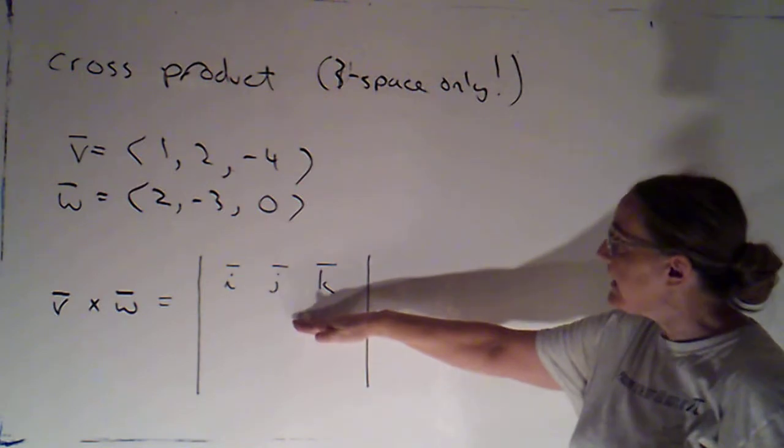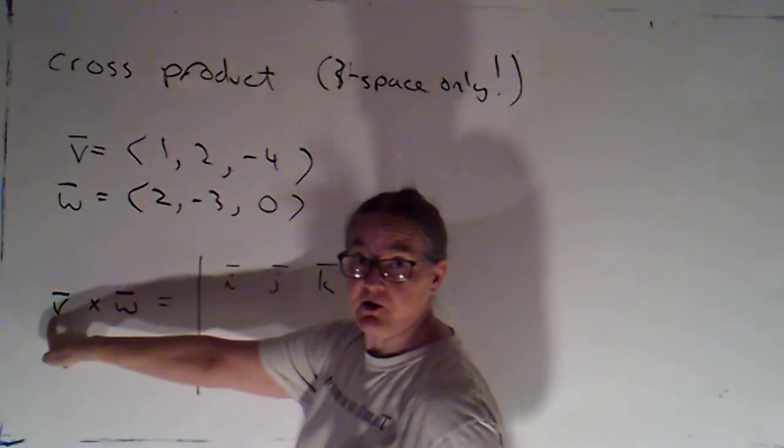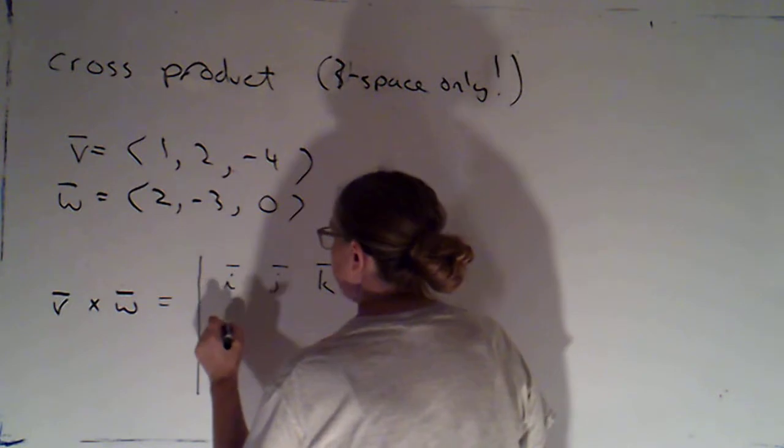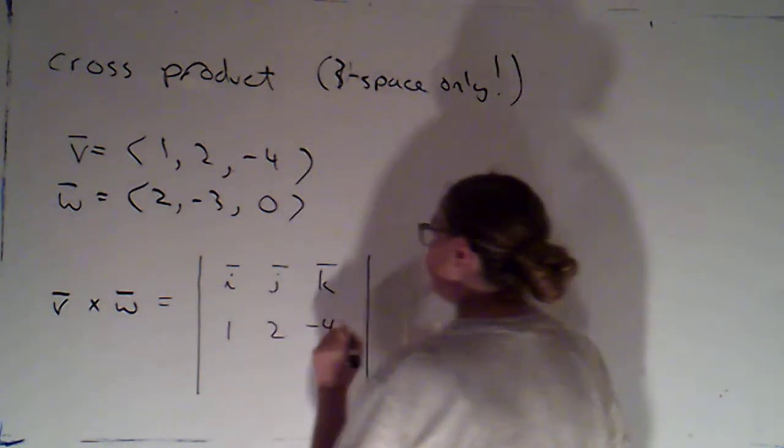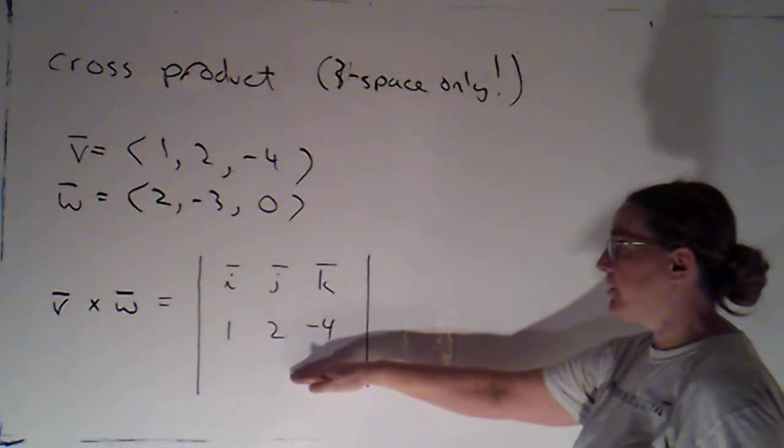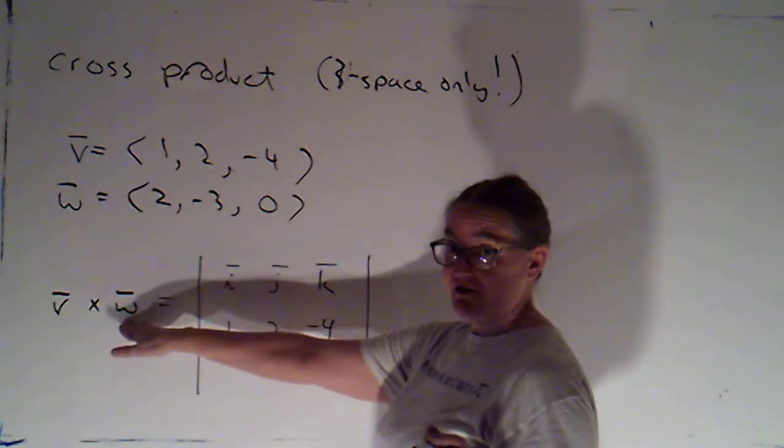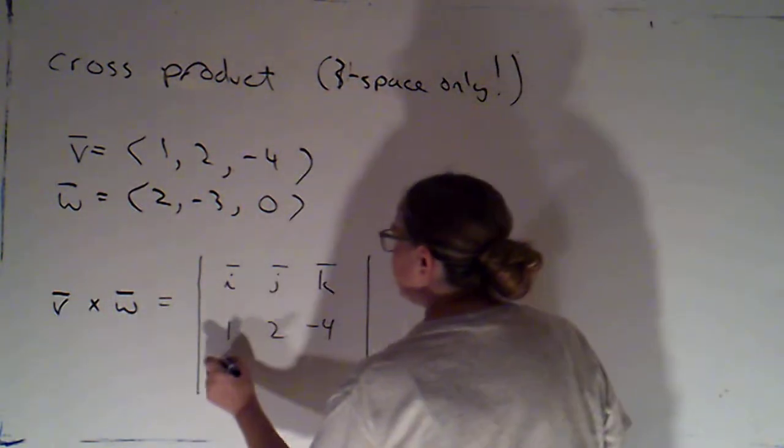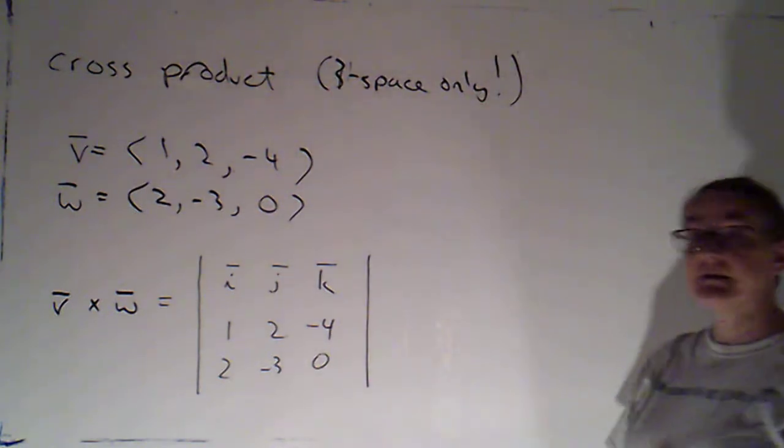For my second row, I'm going to put the first vector in this cross product. So I would put 1, 2, negative 4. And for the third row, I'm going to put the second vector in my cross product. So that would be 2, negative 3, 0.